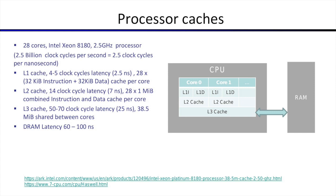Modern processors get memory from RAM, but they optimize how they get memory by having built-in caches. Modern processors have three layers of caching built into the CPU: Level 1, Level 2, and Level 3.